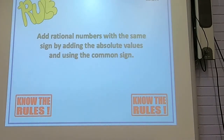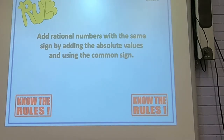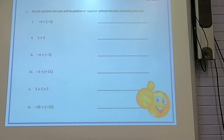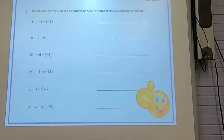You already wrote that rule, so don't copy it again. You add rational numbers the same as integers with the same sign by adding the absolute values and using the common sign. So positive 3 plus positive 5 — they're not fractions, but you added them and kept the positive sign, so it's positive 8. For this exercise, they just want you to say whether the answer is positive or negative, so pause the video and work the problems.